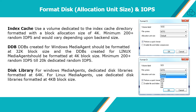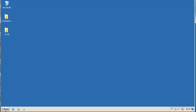For disk library on Windows, dedicated disk libraries are formatted at 64K. For Linux, use dedicated disk libraries formatted at 4K block size. For IOPS, use the IO meter tool to test IO operations per second on the disk drive. For this video, we have added 3 different volumes or LUNs. We will use one for index cache, one for DDB, and one for mount path. We need the disk management tool to perform the actions.